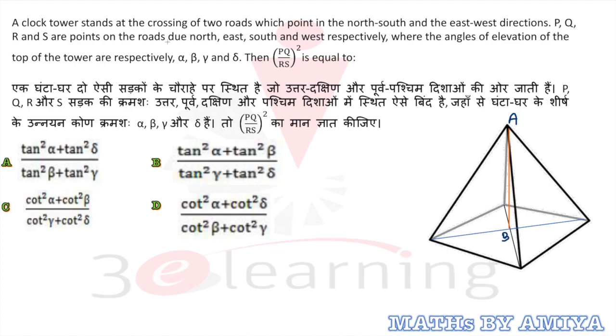P, Q, R, S are the points in the north. P point is in the north. Then in the east is nothing but Q. Then we have south is nothing but R. And we have S in the west. We have these points respectively.